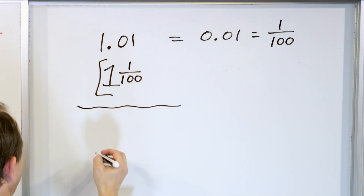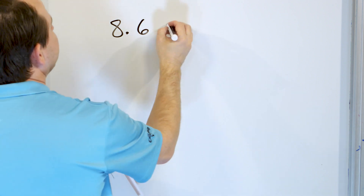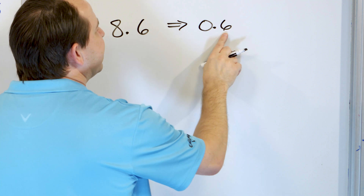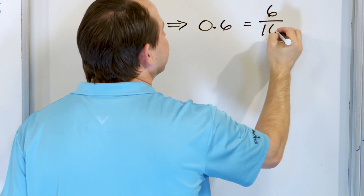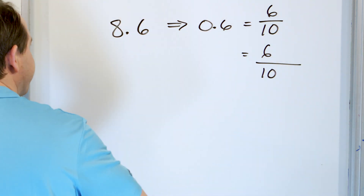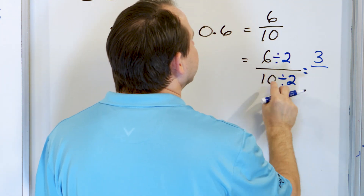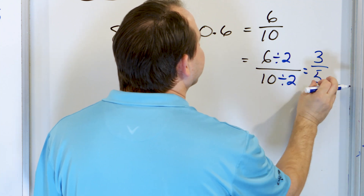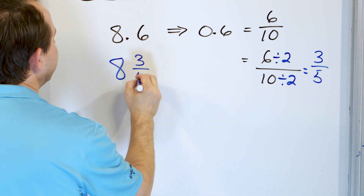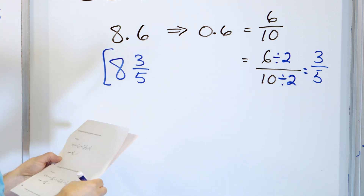Only three more. Let's take a look at 8.6 and convert this into a mixed number. We're going to ignore the whole number and focus only on the 0.6. This is in the tenths place — six in the tenths place. I can simplify by dividing top and bottom by two, since they're both even numbers. Six divided by two is three, and ten divided by two is five, so three-fifths is what the 0.6 means. I attach it to the whole of eight: eight and three-fifths.